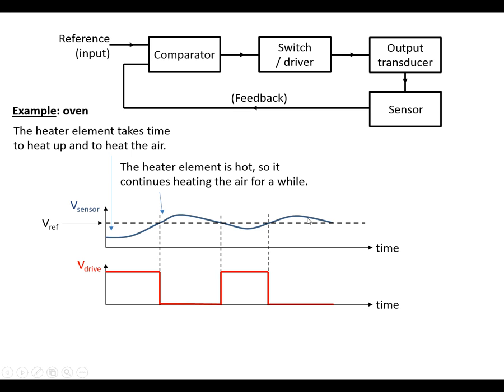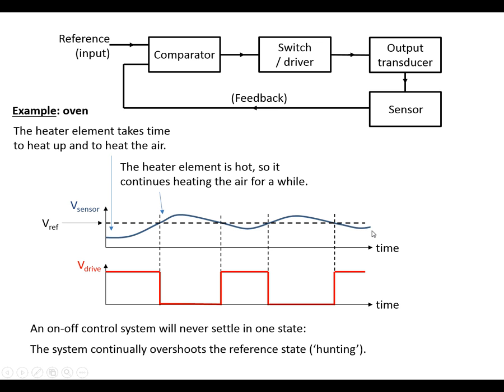And it continues. Again, it's going to overshoot because the heater is still pumping out heat. And so on. And we can see from this one that the on-off control system, it never settles at exactly the reference. It always oscillates around. And this is what we call hunting.